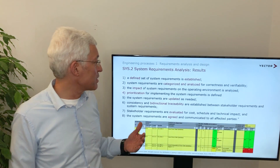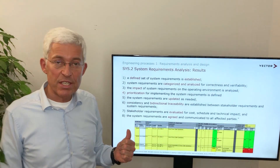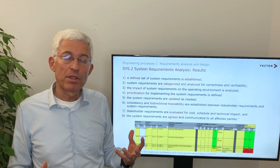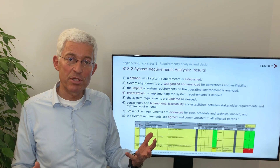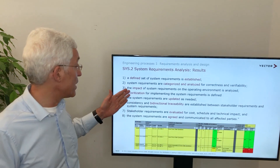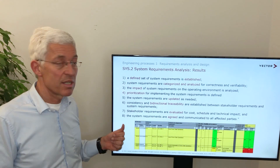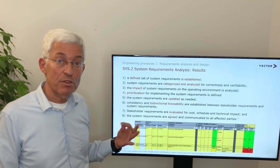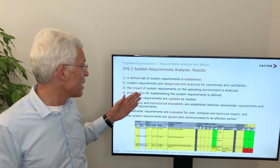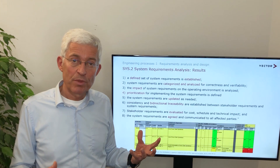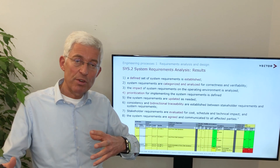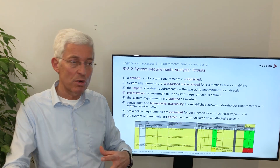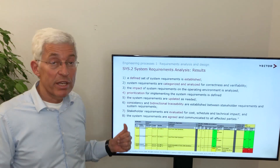Now from the perspective of what are the expected results, ASPICE gives us a set of very simple good-enough requirements topics. One is that we need to set up a system requirements list. We have to categorize the requirements and we have to analyze the requirements. We have to look at their impact — impact means how do they relate to other requirements, how do they relate to existing functionality or to a platform. We have to make a prioritization.